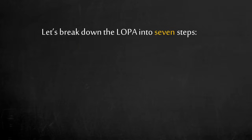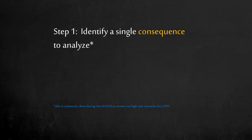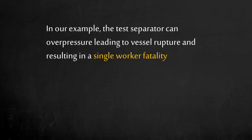Now that you get the concept of risk tolerance, let's look at the 7 steps of conducting a Layer of Protection Analysis. Step 1: we need to focus on a single consequence. LOPA is applied to higher severity scenarios that are identified in the HAZOP. Consider a test separator vessel overpressuring. In this example, the worst credible case for vessel rupture results in a single worker fatality nearby.